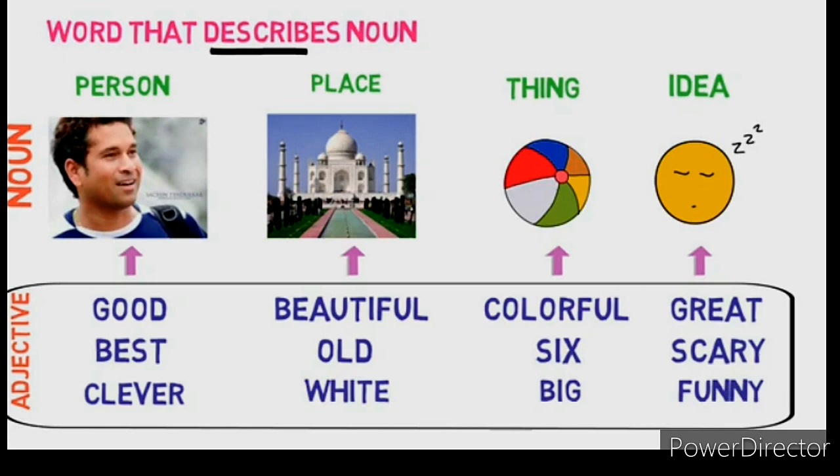Let's describe a place — Taj Mahal. We can say: Taj Mahal is a beautiful place, Taj Mahal is a very old place. A thing, like a ball — we can say: this is a colorful ball, this is a big ball. Here colorful and big are adjectives describing ball. Now, idea: I got a great dream, I got a scary dream. So here great and scary are adjectives.